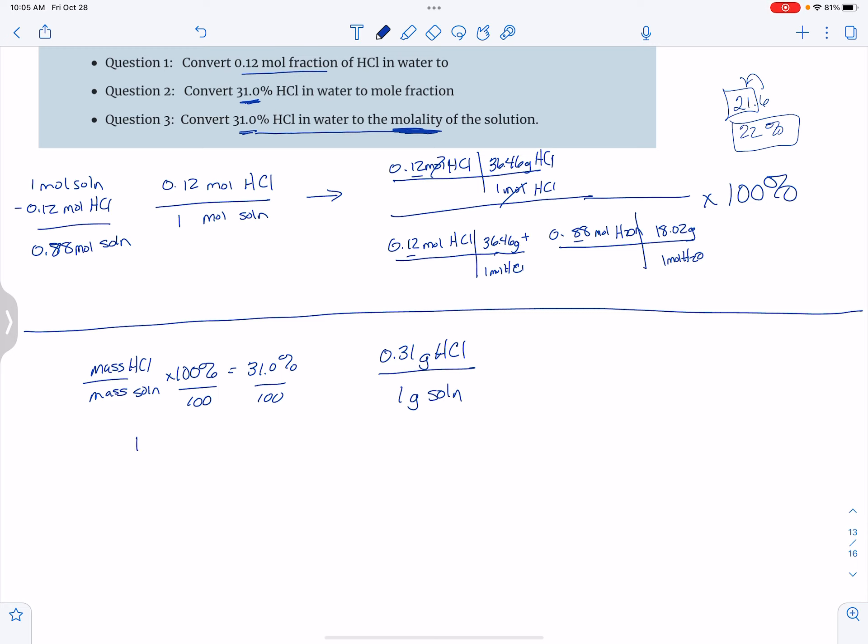I'm not going to forget that one minus 0.31 gives me 0.69, so I can break that up into two parts. I'm going to say 0.31 grams of HCl, and then in 36.46 grams of HCl I have one mole of HCl. Now my top unit is taken care of.